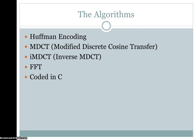The FFT also allows the perceptual model to work in the frequency domain. 1024 frequencies are passed into the perceptual model. Everything is coded in C, and if you're doing the embedded implementation, it's coded in assembly.